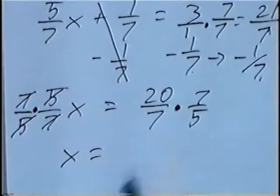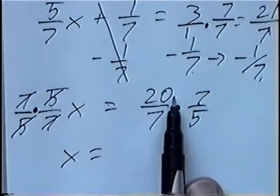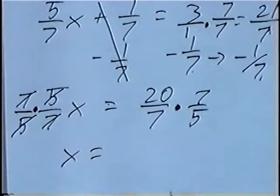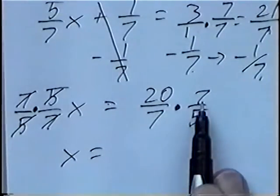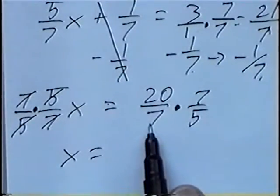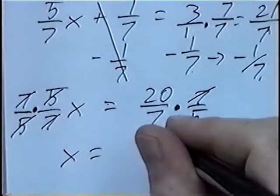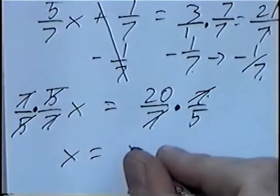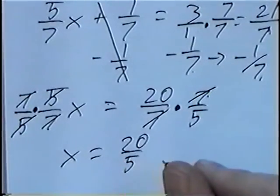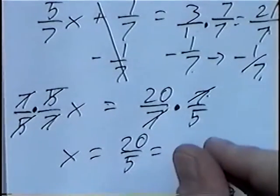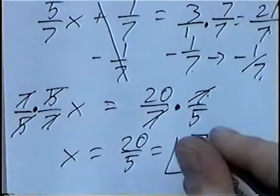We're left with x, and multiplying the fractions on the right-hand side. You could multiply straight across — you do not need common denominators when you multiply. An easier approach here: we have a 7 in the numerator and a 7 in the denominator, so we can cancel those out. 7 divided by 7, and we're left with 20 over 5. Dividing 20 over 5 gives the answer x equals 4.